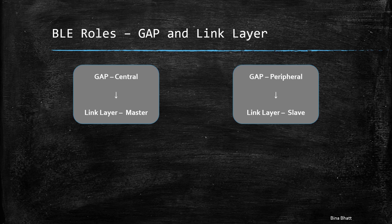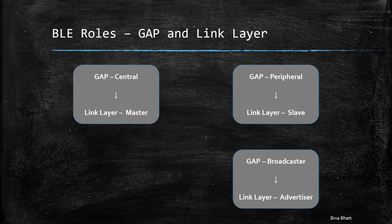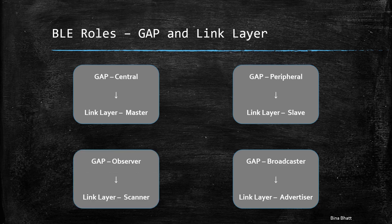And GAP peripheral is nothing but slave at Link layer. And GAP broadcaster is an advertiser at Link layer. And GAP observer is nothing but a scanner at Link layer level.